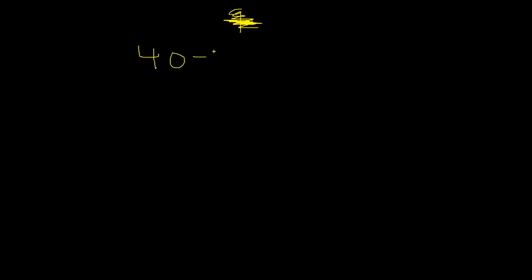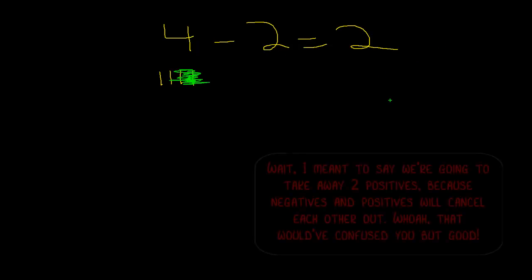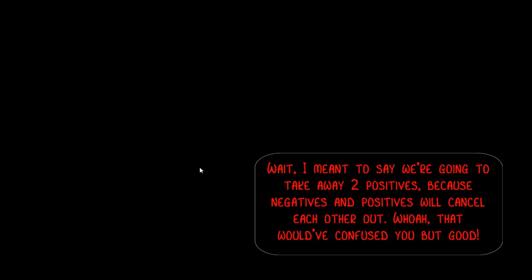When we say 40 minus 20 equals 20, we're saying add 20 negatives to 40. Simplified: 4 minus 2 equals 2. We have four positives — yellow is positive, green is negative. We add two negatives. Those two negatives cancel two of the positives, and what's left over is positive two. So 4 minus 2 equals 2. Subtraction is just adding negatives.